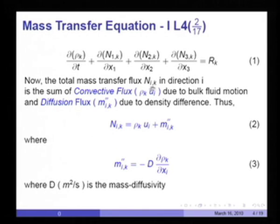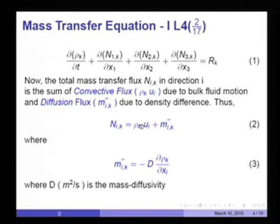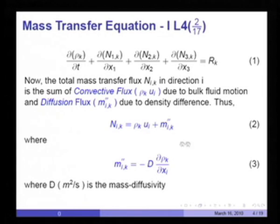The total mass flux N_ik in direction i is the sum of the convective flux ρ_k·u_i due to bulk fluid motion and diffusion flux m-double-prime_ik due to density difference. Thus, N_ik is represented as ρ_k·u_i plus m-double-dot_ik. Writing convective flux in this manner indicates that each species is traveling or being carried at the same velocity as the bulk fluid. The diffusion flux arises simply due to differences in density at neighboring locations.